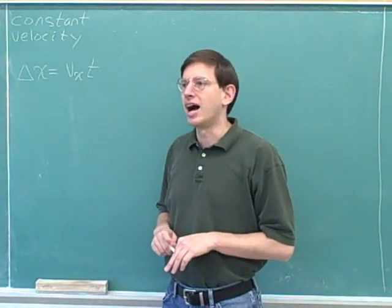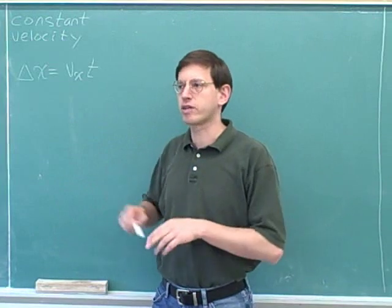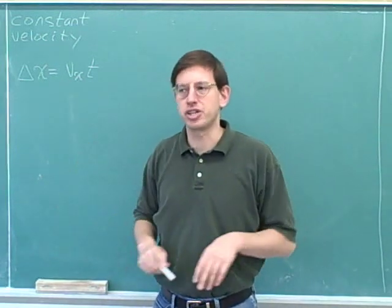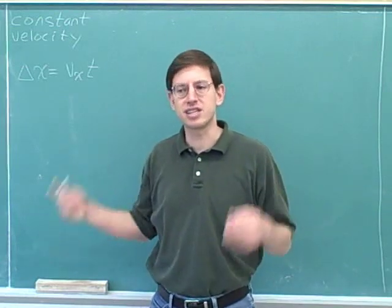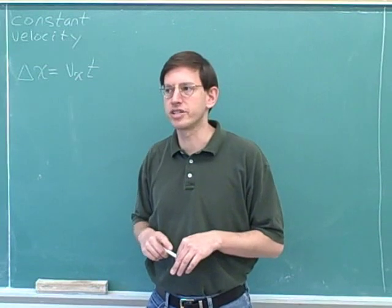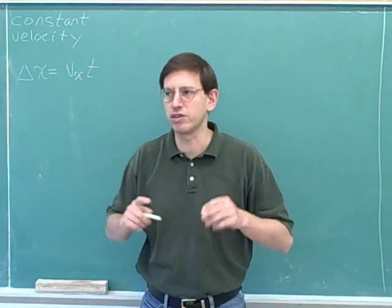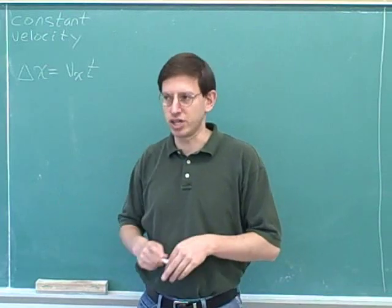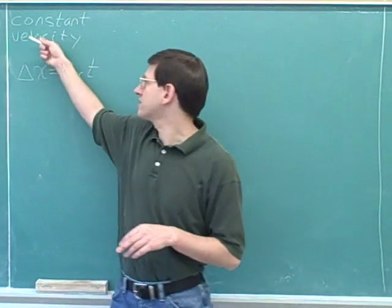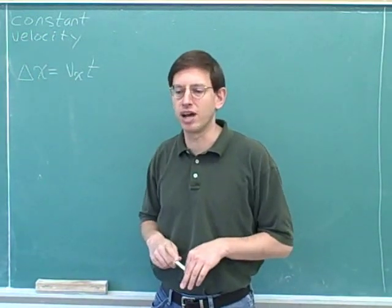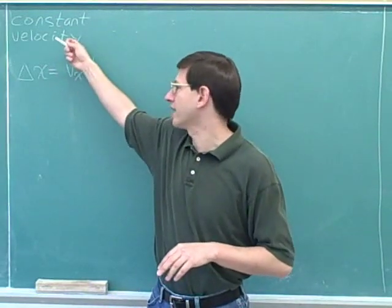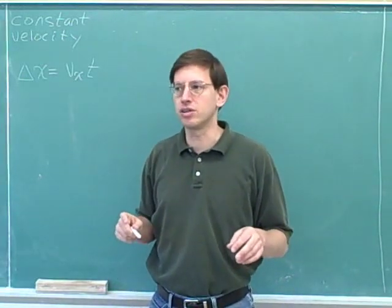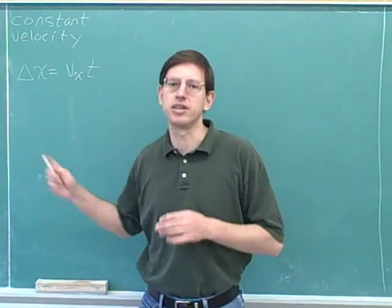This is actually quite an important section because there's one very important situation where you have constant velocity: two-dimensional projectile motion. In 2D projectile motion, your horizontal velocity is constant. One of the main reasons we're going through one-dimensional motion is to prepare us for two-dimensional projectile motion, so it's important to feel confident about constant velocity — and again, in that context you would not want to use the original five kinematics equations.